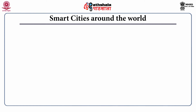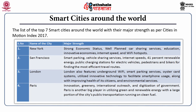Smart cities around the world: the list of top seven smart cities around the world with their major strengths, as per the Cities in Motion Index 2017, is shown here. Number one is New York City. Its major strengths are a strong economic status, well-planned car sharing services, education, innovative economies, internet speed and Wi-Fi hotspots.